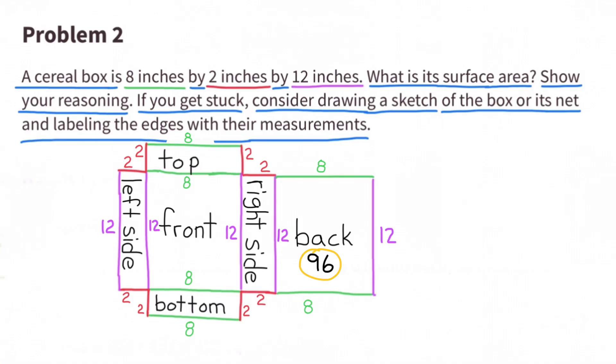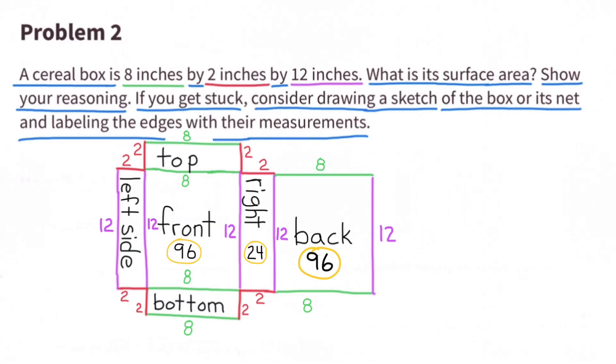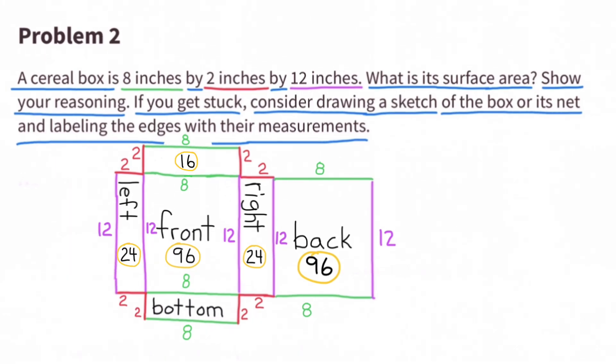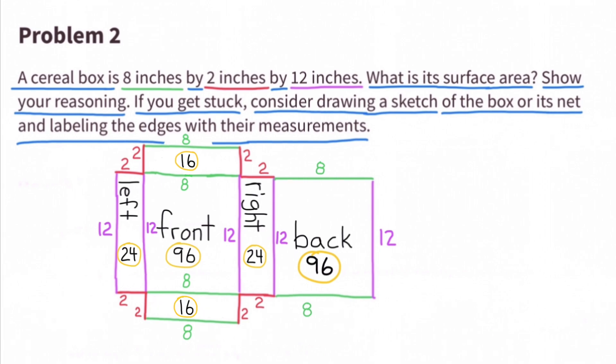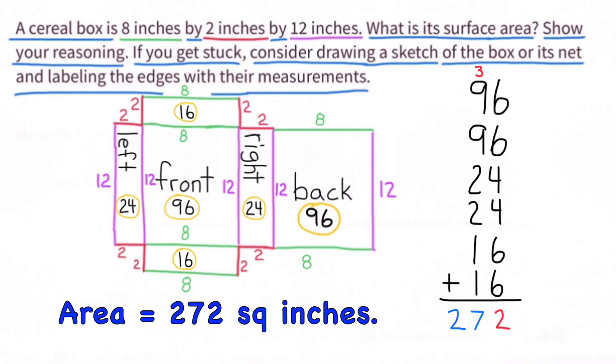8 by 12 is 96, so both the back and the front are 96 square inches. 2 by 12 is 24 inches, so both the right and the left are 24 square inches. And 8 times 2 is 16, so both the top and the bottom are 16 square inches. Add all of those individual surface areas together, and you'll have the surface area for the whole figure. The total surface area is 272 square inches.